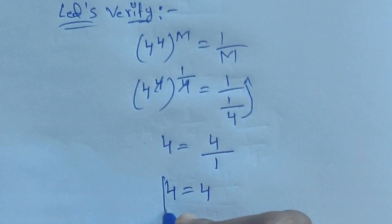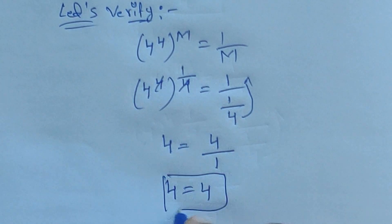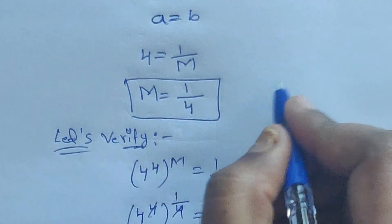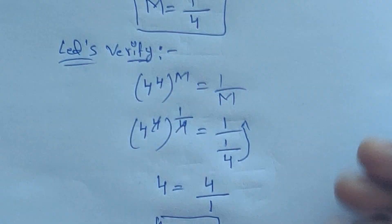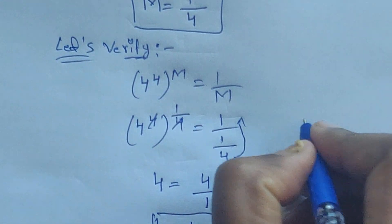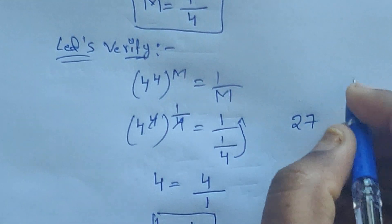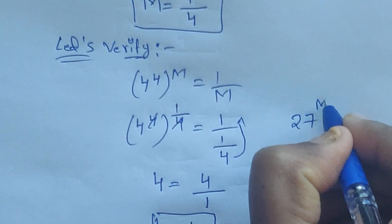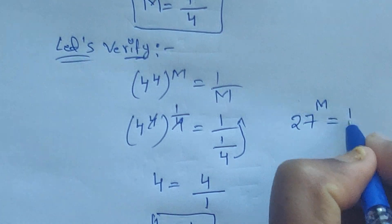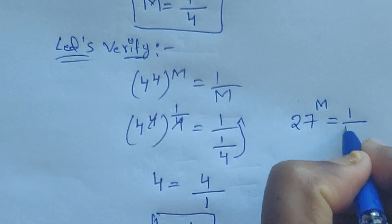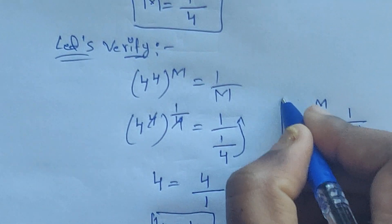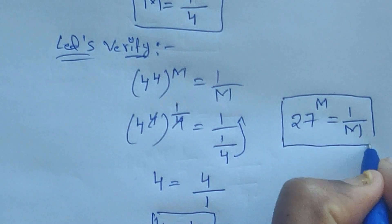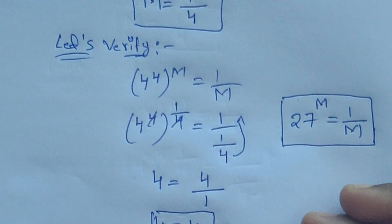So m equals 1 divided by 4 is the correct answer. Now try this: 27 to the power of m equals 1 divided by m. You do this — write your answer in the comment box.